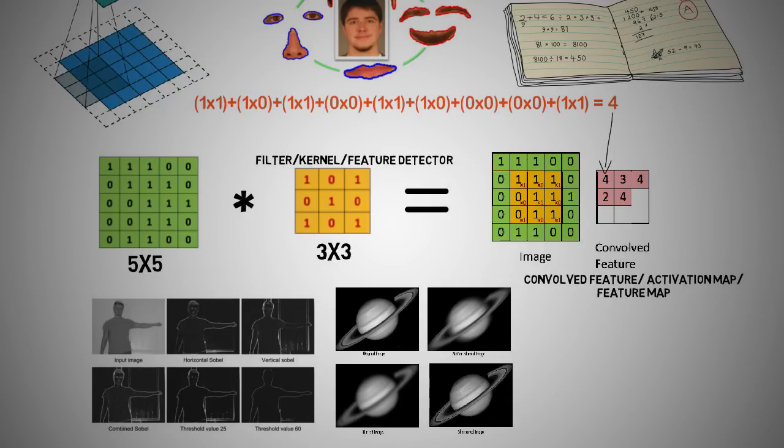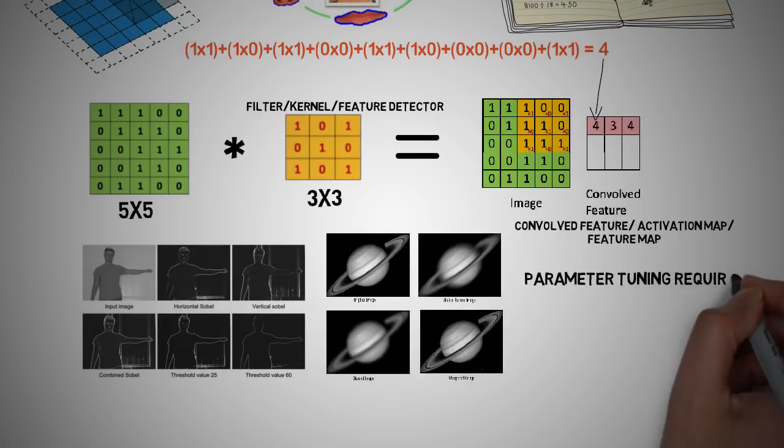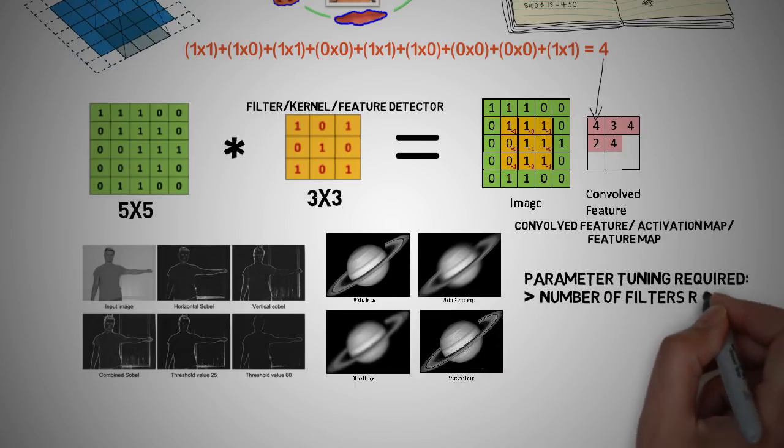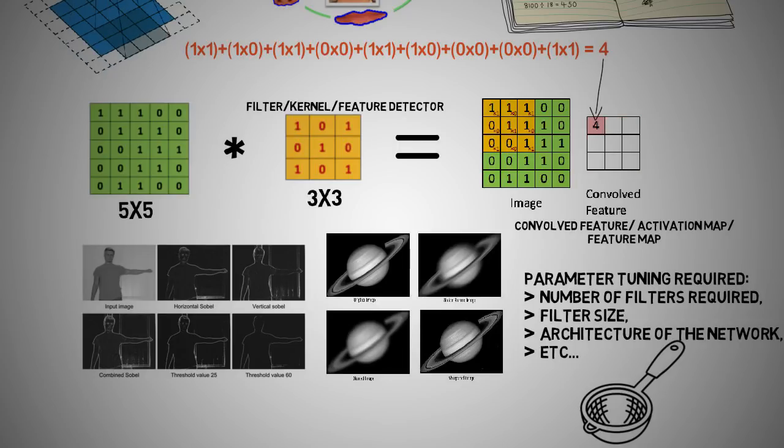This means that different filters can detect different features from an image, for example edges and curves. In practice a CNN learns the value of these filters on its own during the training process, although we need to specify parameters such as the number of filters for the size architecture of the network and some other parameters before the training process. The greater the number of filters we have, the more image features get extracted and the better our network becomes at recognizing patterns in unseen images.